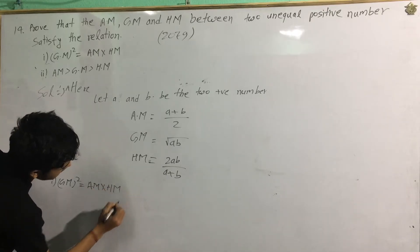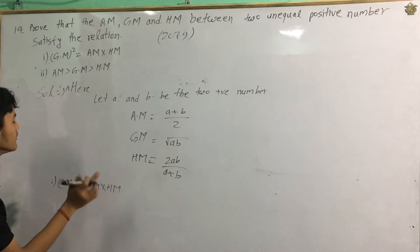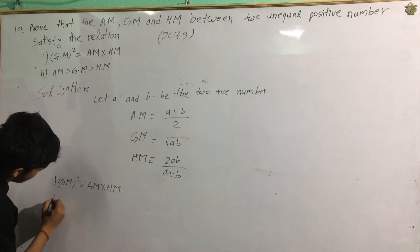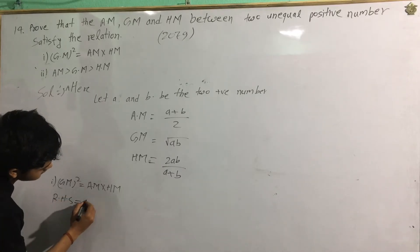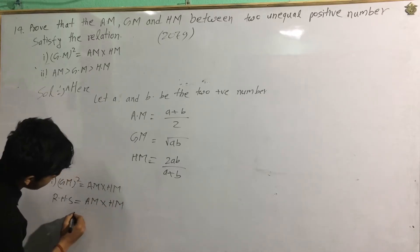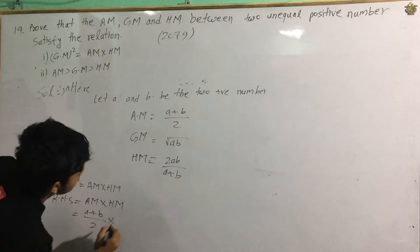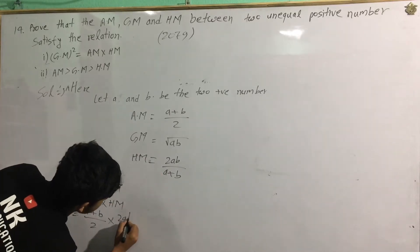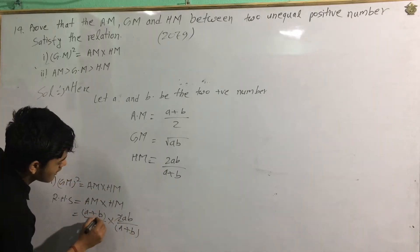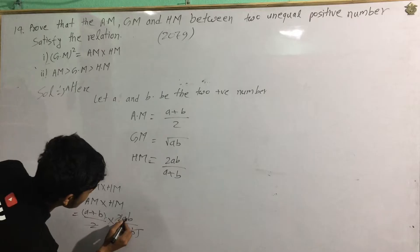LHS is equal to RHS. RHS is equal to AM into HM, that is arithmetic mean into harmonic mean. AM is (a plus b) by 2, and HM is 2ab by (a plus b). Multiply (a plus b) into 2ab.